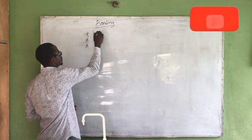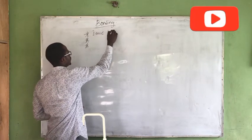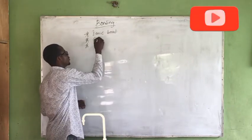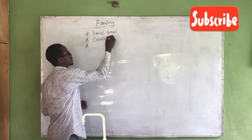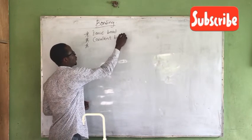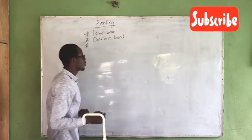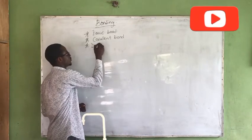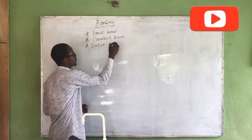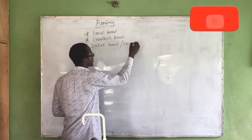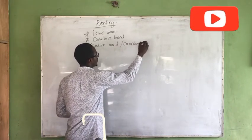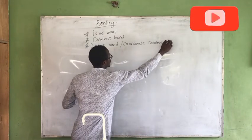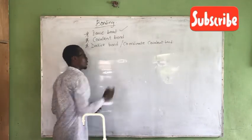There are basically three types of bonds that exist between atoms. We have the ionic bond, which is also called the electrovalent bond. We also have the covalent bond as the second type. Then we have the dative bond, also called the coordinate covalent bond. I'm going to start with the ionic bond.